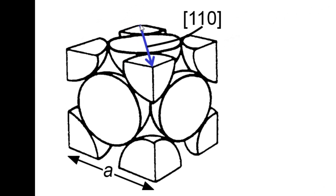Here we have a face-centered cubic cell, and we're looking at the [1,1,0] direction. We have a side A — considering it's cubic — so the length of this line in the [1,1,0] direction is A times the square root of 2. And we traverse — count them — 1, 2, 3, 4 radii.